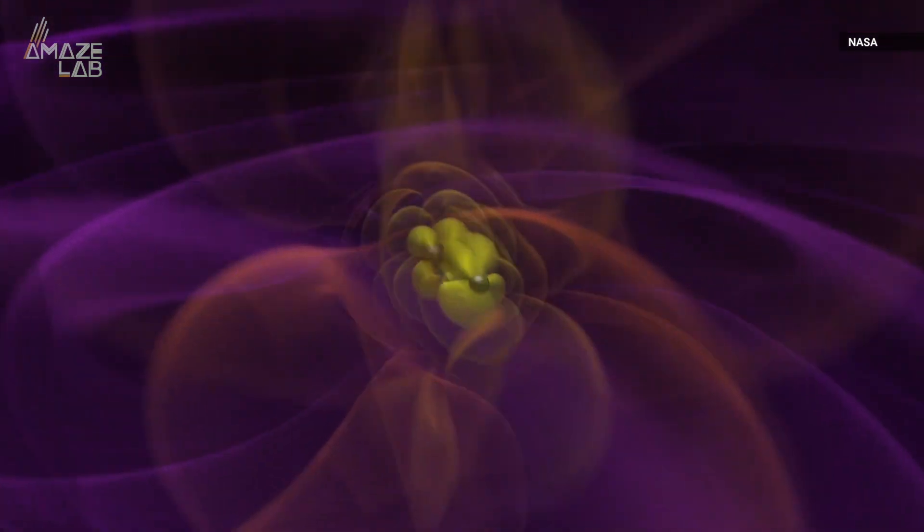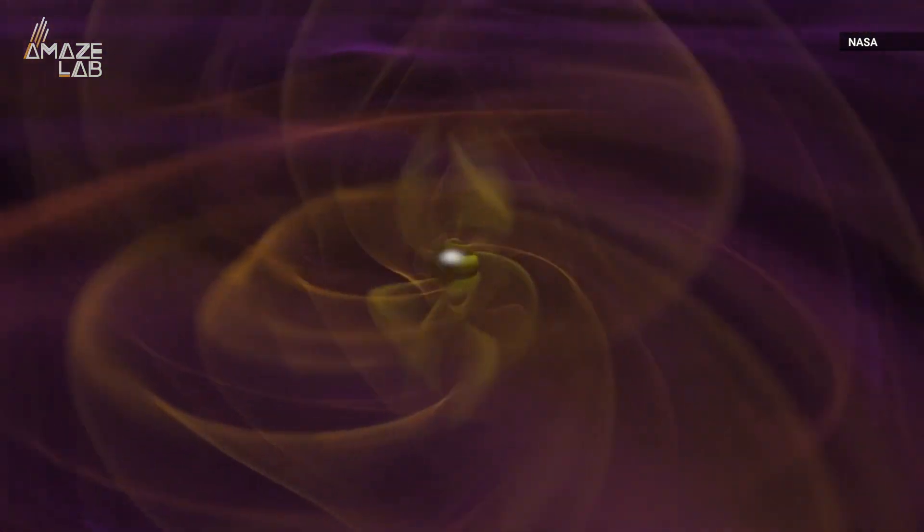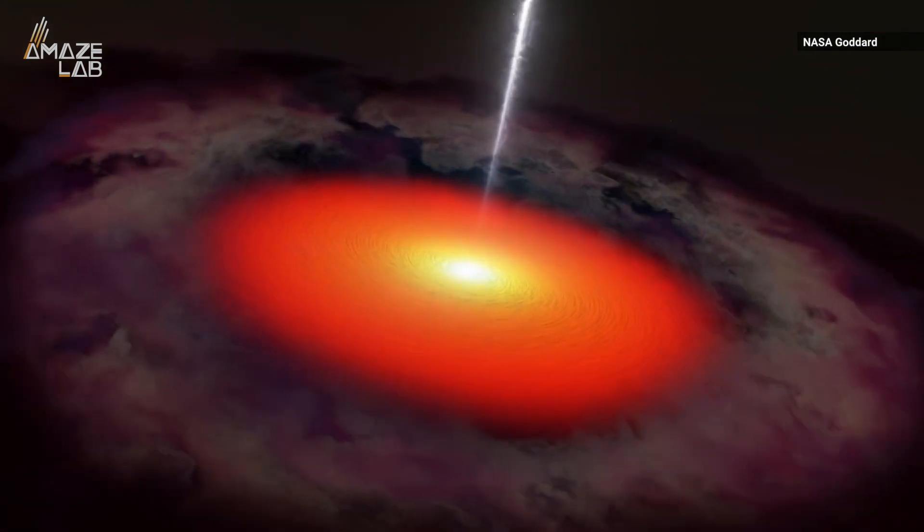Scientists have detected ripples in space and time known as gravitational waves that came from the biggest known collision of black holes. The collision actually formed a new black hole that is 80 times larger than our Sun.